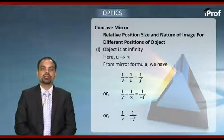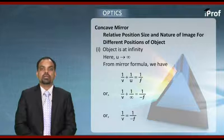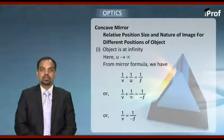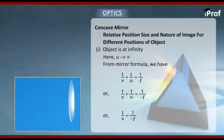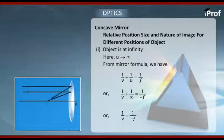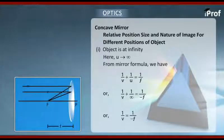We are going to see the positions of images for different positions of object. We start with the first case when we take object at infinity. When we say infinity, we mean the distance of object is much larger compared to the focal length of the mirror. That is what we mean by infinity.